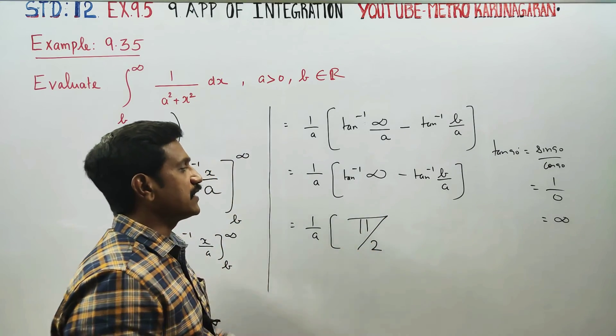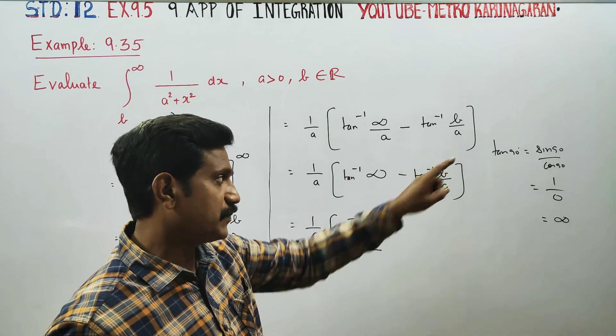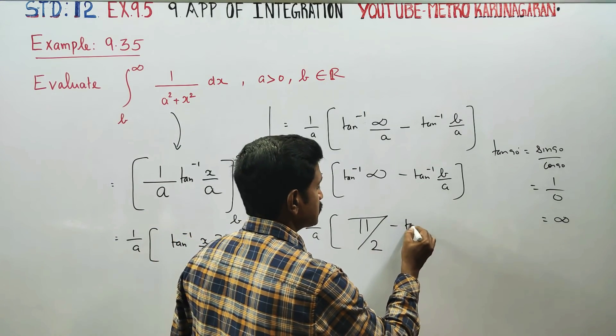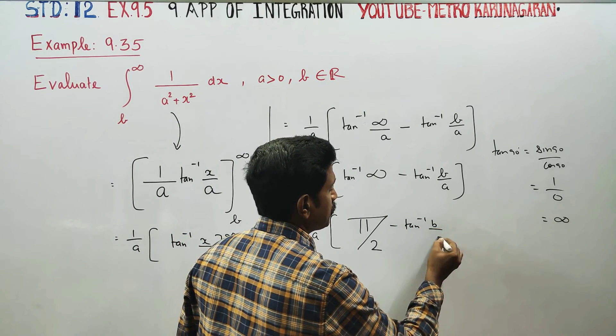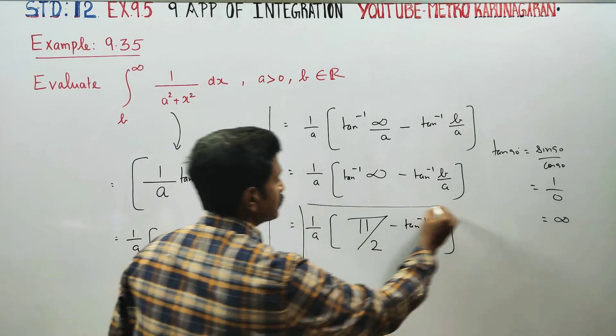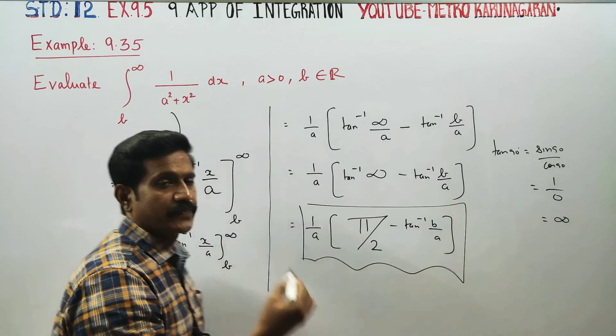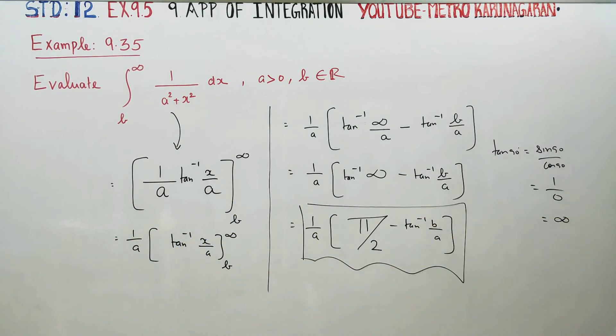Therefore, tan inverse of infinity is 90 degrees or π/2. The final result is π/2 minus tan inverse of b/a. This is your final result for this integration. Two marks you can get.